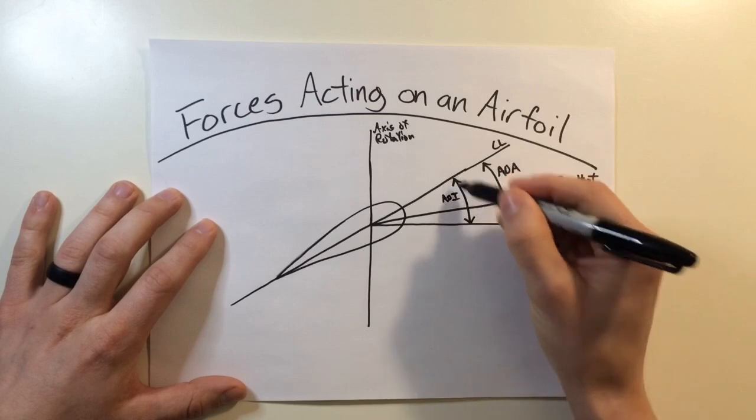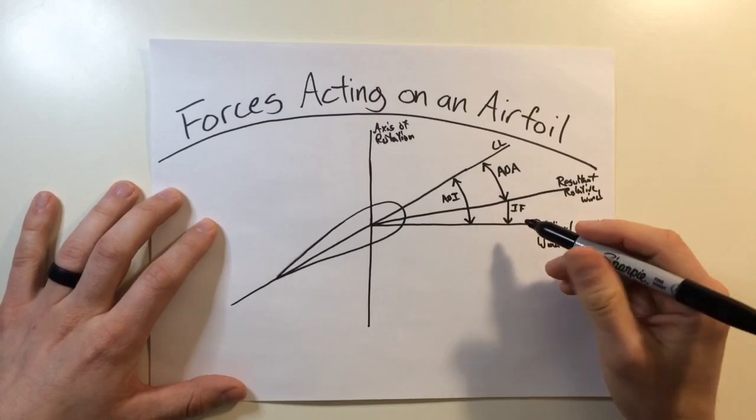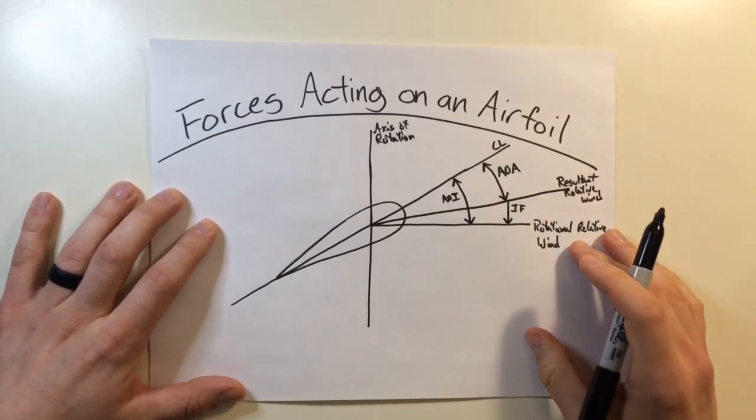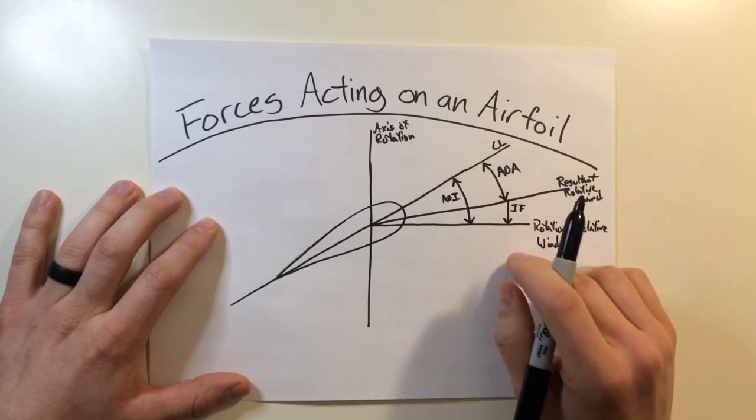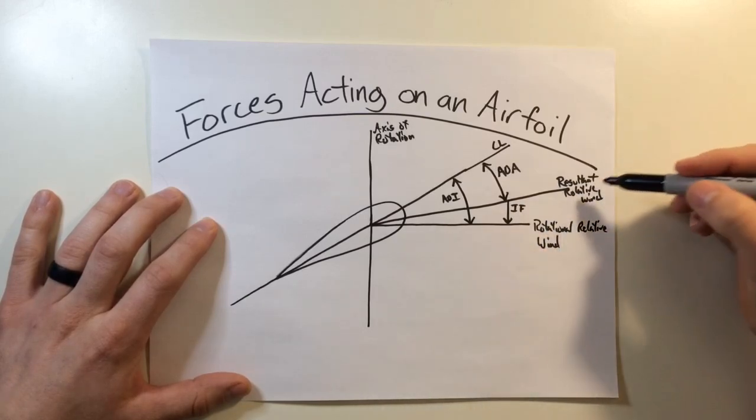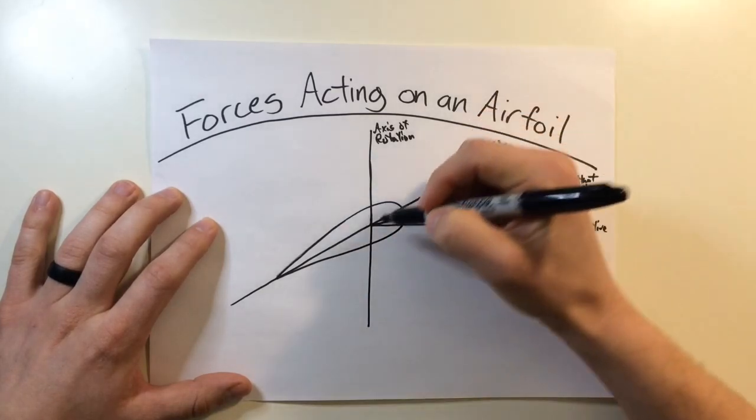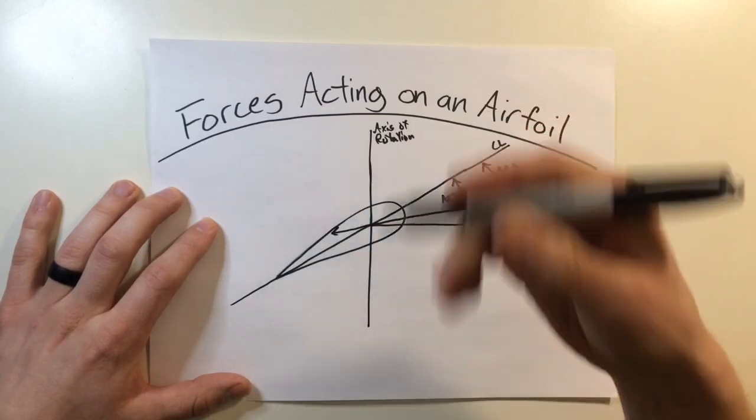By increasing that pitch angle, we adjust this angle, which then broadens this angle even more, potentially affecting the amount of induced flow depending on the flight profile we're in. But from here, it's necessary to note that lift acts perpendicular to the resultant relative wind. So what we're going to do, we follow this resultant relative wind all the way back.